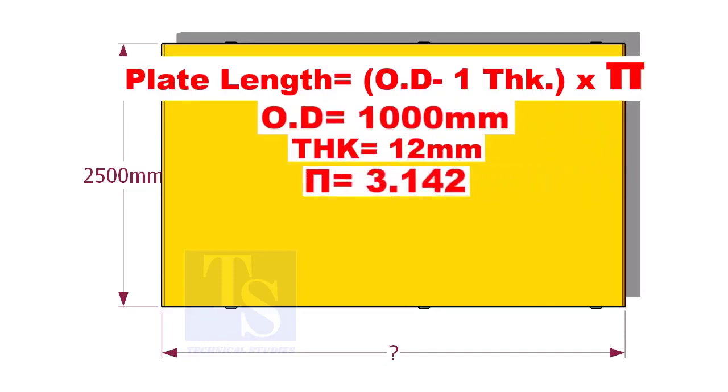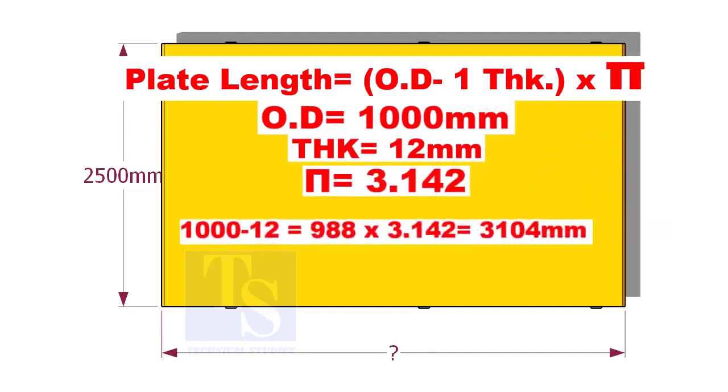1000 minus 12 is equal to 988 mm, multiplied by 3.142 is equal to 3104 mm.